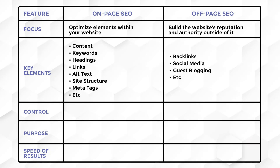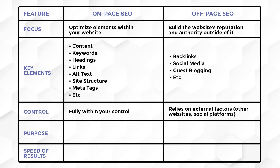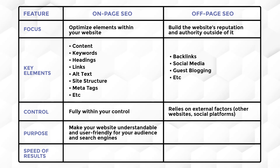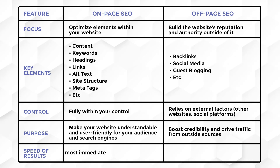For on-page SEO, you have full control over every aspect of your website. But you have less control with off-page SEO because you can't control the actions of other bloggers or authority figures. The purpose of on-page SEO is to make your website understandable and user-friendly, while the purpose of off-page SEO is to boost credibility and drive traffic from outside sources. Results for on-page SEO are almost immediate, while off-page SEO takes longer because it relies on external validation.